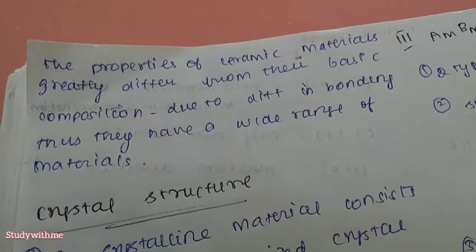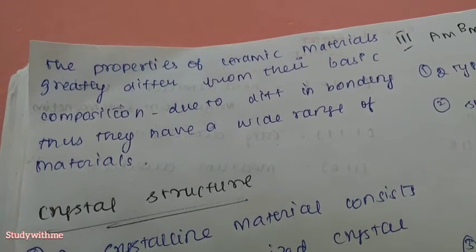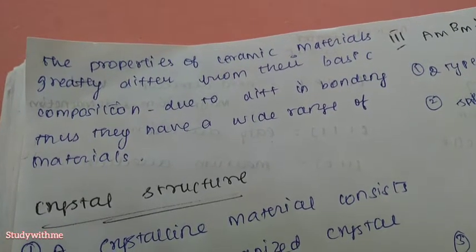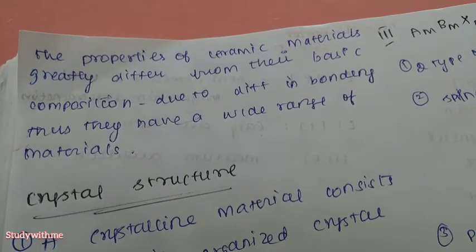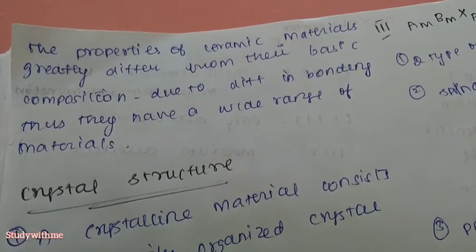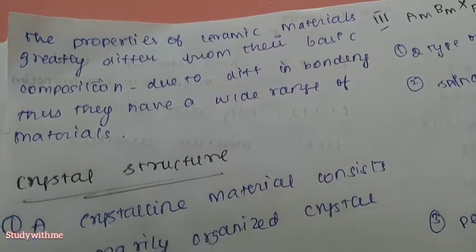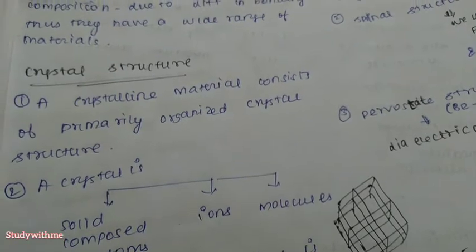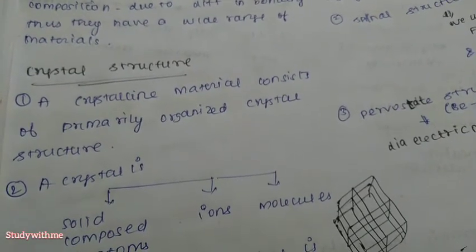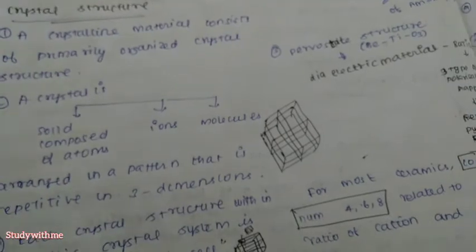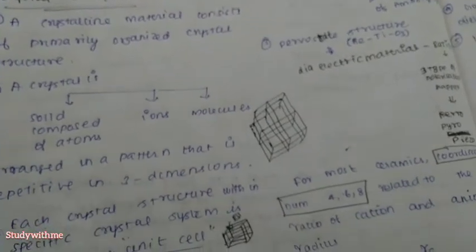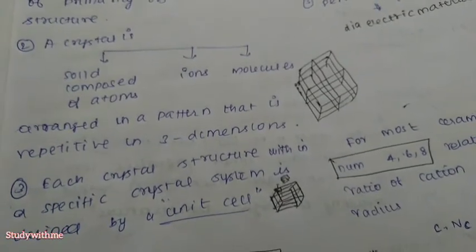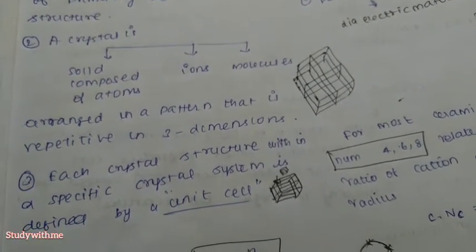The properties of the ceramic material are greatly different based on their basic composition, due to different bonding, giving a wide range of materials. The crystalline material consists of a primarily organized crystal structure, with solid components of atoms, ions, and molecules. The arrangement pattern is repetitive in three dimensions.